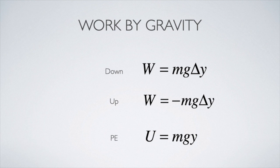So if an object moves with a downward displacement of delta y, we can calculate the work as mg delta y. If it moves upwards, our work is minus mg delta y. So what that suggests is that the expression for the potential energy due to gravity, at least near the surface of the earth, is just mg times y.